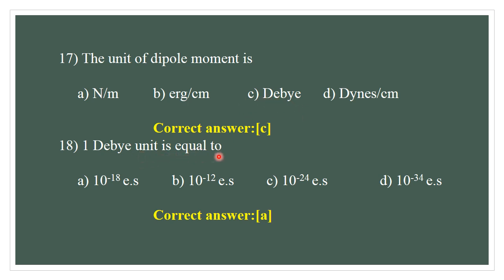1 Debye unit is equal to: A) 10 to the power of -18 ESU, B) 10 to the power of -12 ESU, C) 10 to the power of 18 ESU, D) 10 to the power of 35 ESU. The correct answer is A — 10⁻¹⁸ electrostatic units.